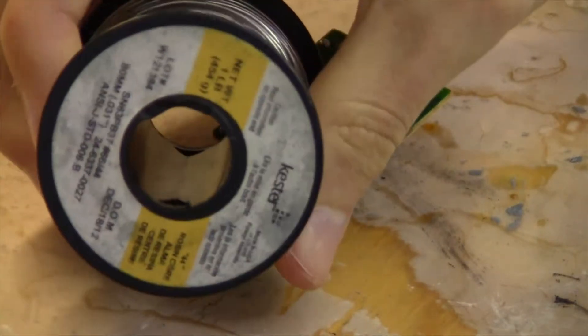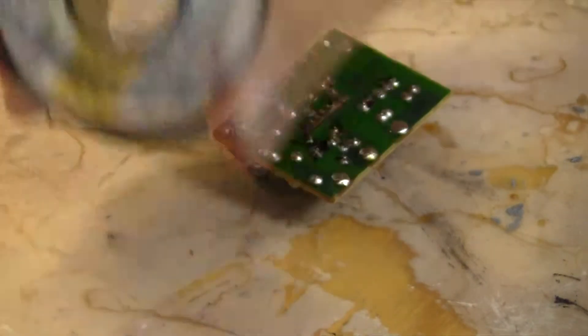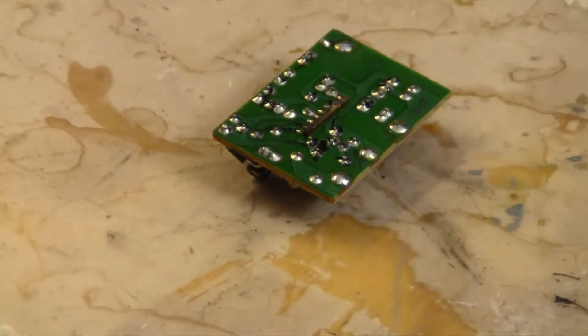So I'm using the Kester solder 6040 lead. Pretty good stuff. I really like how it flows when it's being melted.